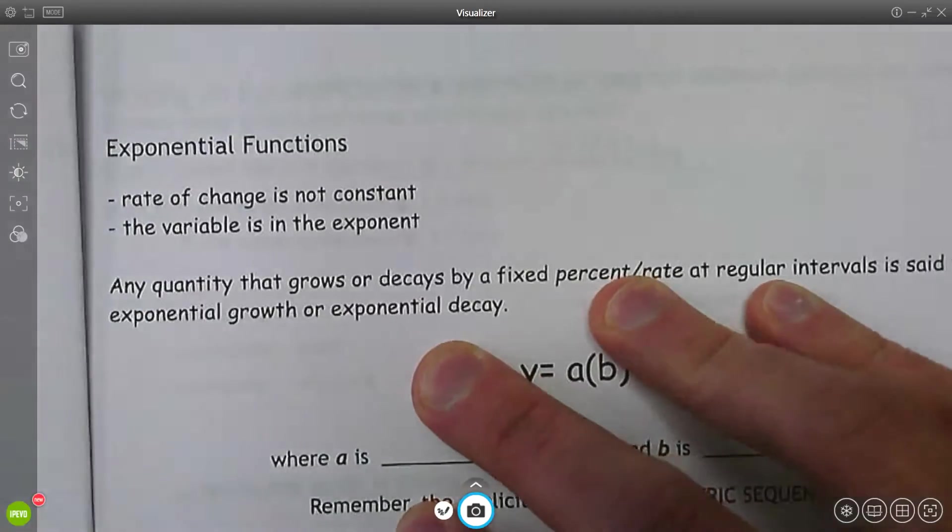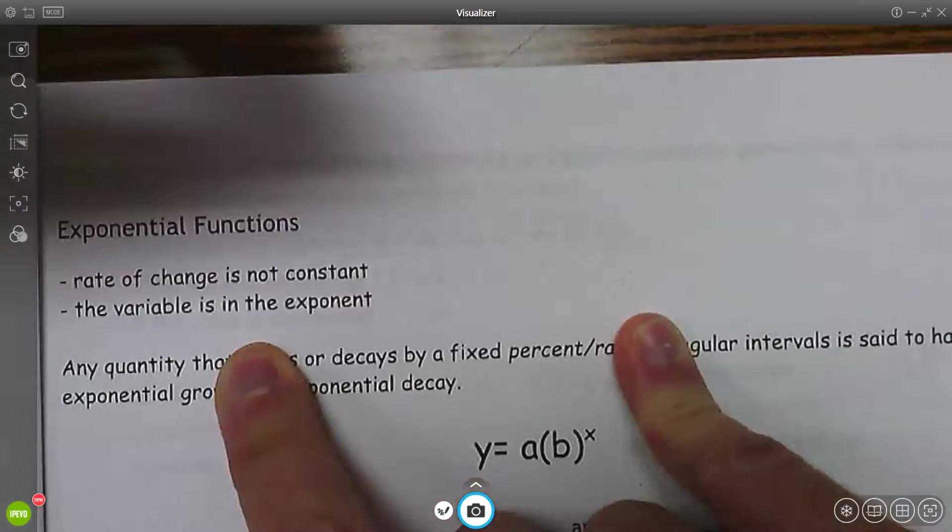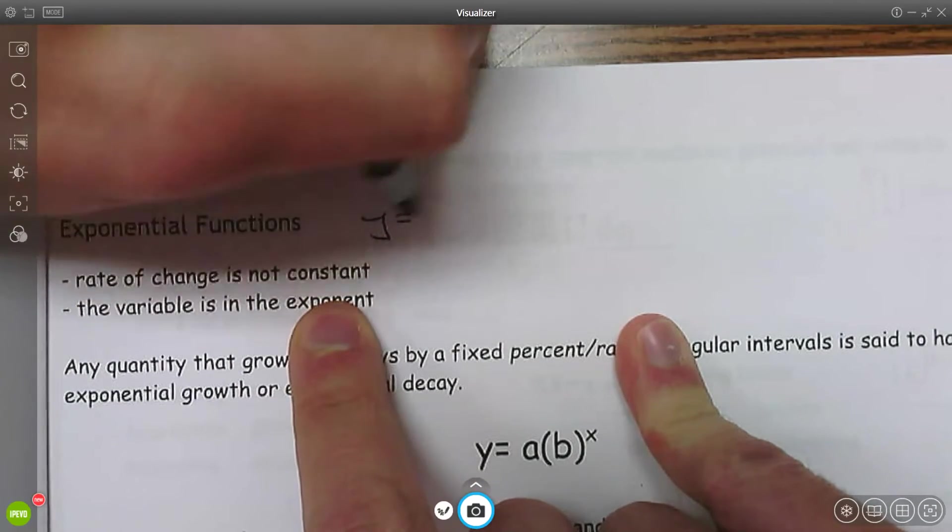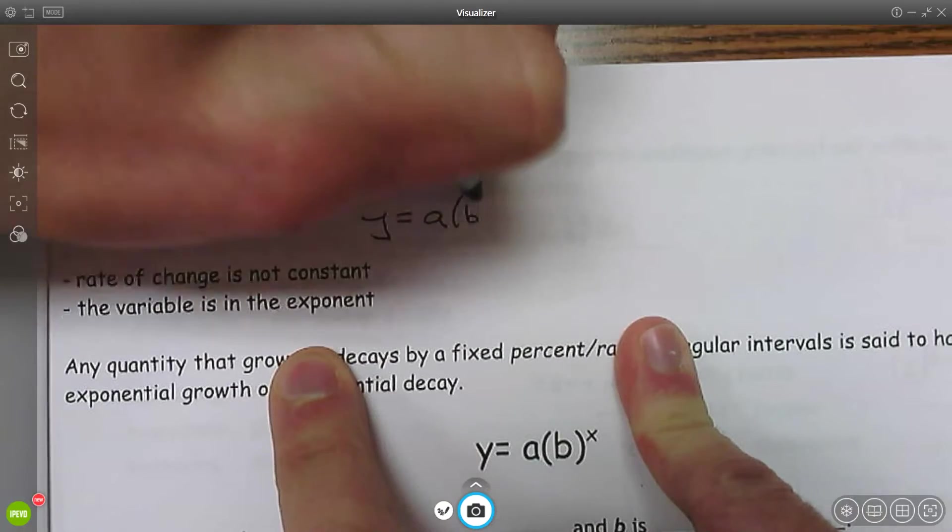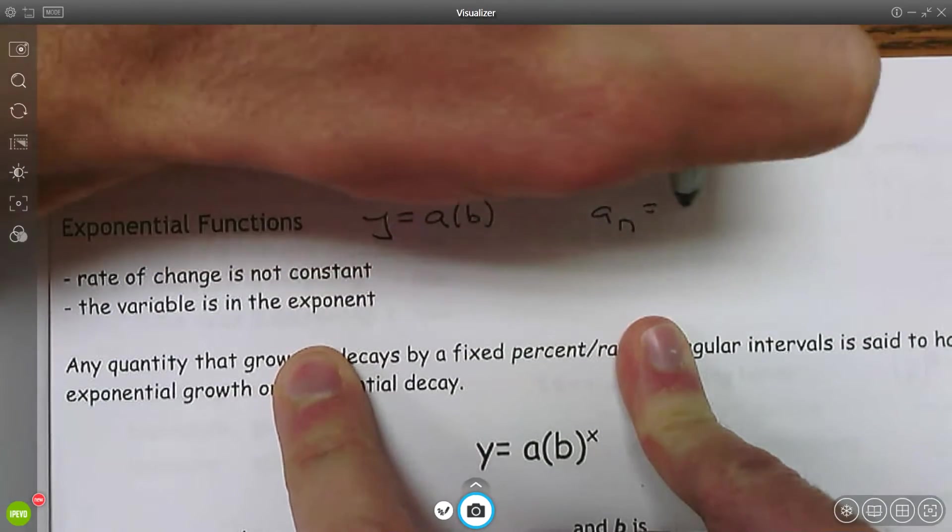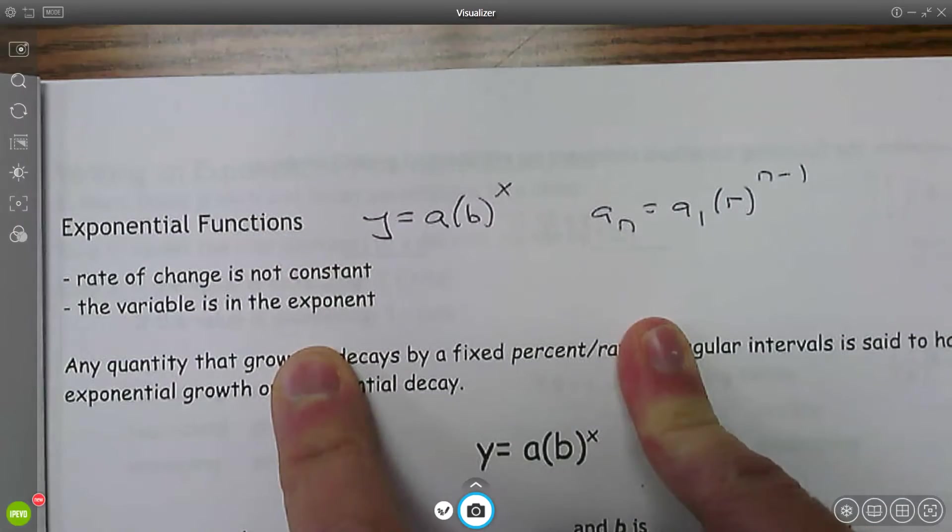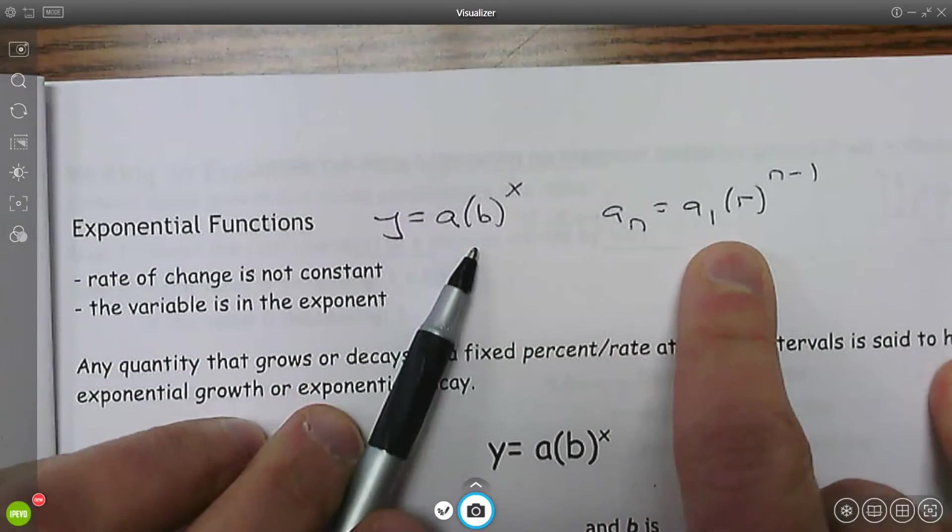So we're going to talk about exponential functions. We've been talking about them. They're very similar to geometric sequences. Exponential functions have this look: a times b to the x. Geometric sequences look like this: the first number times this common ratio to the n minus one. So they are very similar.